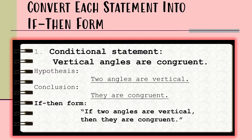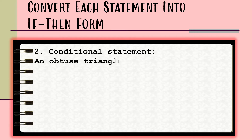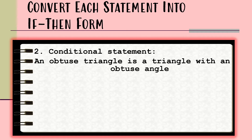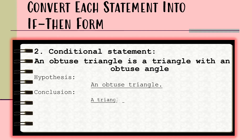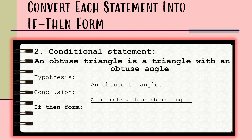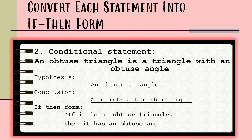Next, we have the statement: 'An obtuse triangle is a triangle with an obtuse angle.' The hypothesis is 'an obtuse triangle,' while the conclusion is 'a triangle with an obtuse angle.' Rewriting this into its if-then form, we have: 'If it is an obtuse triangle, then it has an obtuse angle.' Remember that we may reword the hypothesis and conclusion depending on how it is being stated.